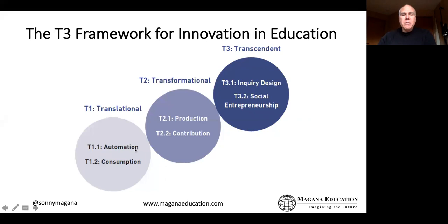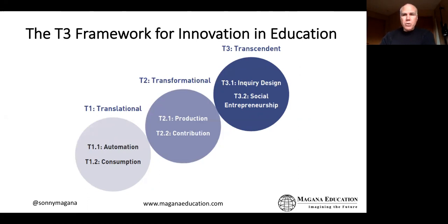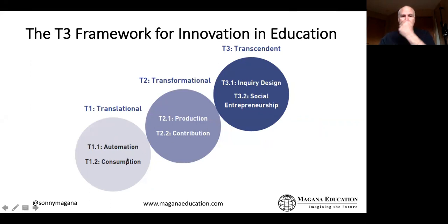There are also subordinate headings called elements. Automation and consumption are the elements in the translational technologies domain. In the transformational domain, I have production and contribution. In the transcendent domain, I have inquiry design and social entrepreneurship. You can think of the T3 framework as both a hierarchy—because as you move higher up the levels the technology use has greater impact—and also as a continuum, because there may be times you go back down to automation and consumption and move throughout the levels with agility.